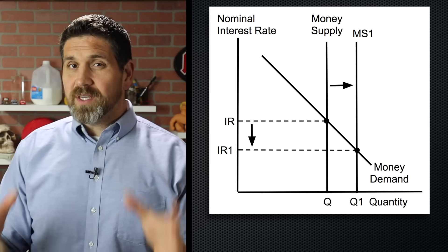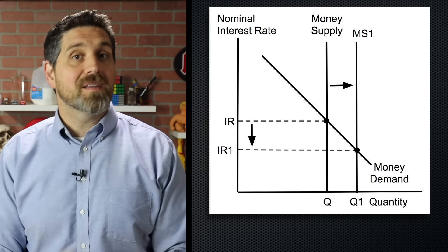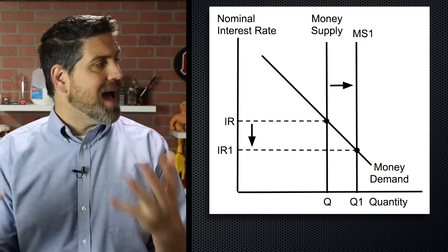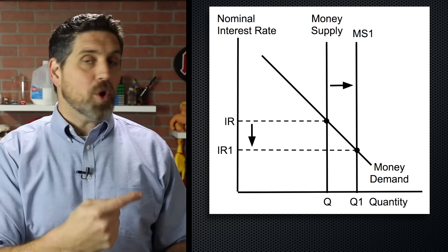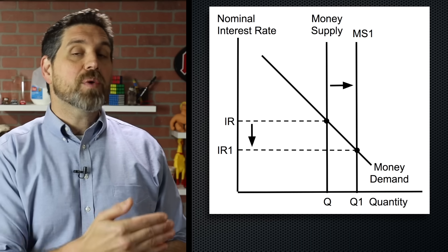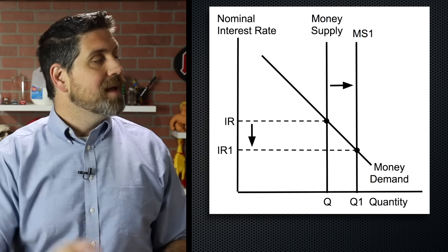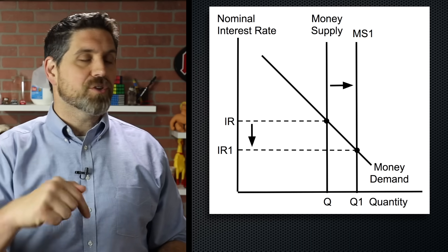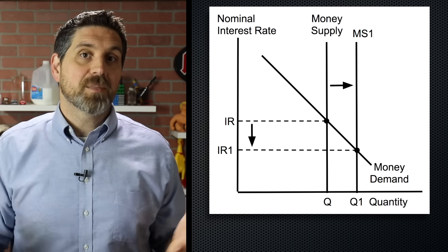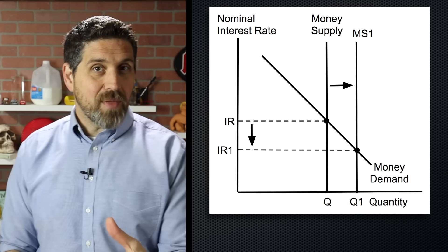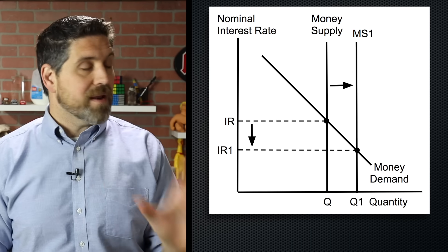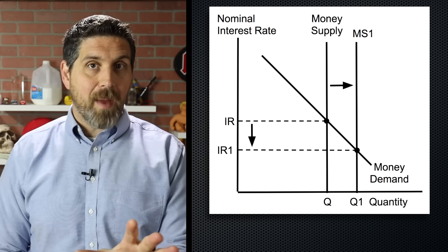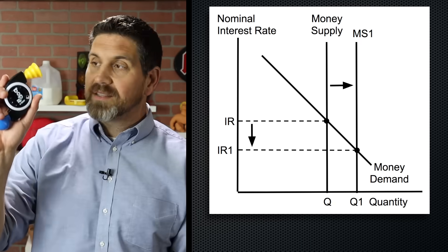Now that you have that down, let's talk about monetary policy. Let's assume there's a recession, so GDP is down and unemployment is high, and the central bank wants to increase the money supply to decrease interest rates and increase spending. To do that, to change the money supply, the central bank can do three things.